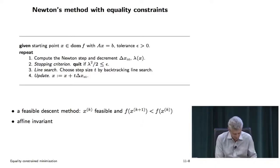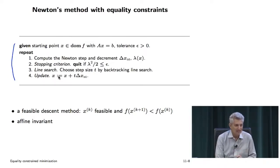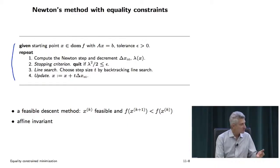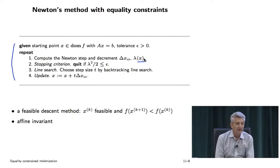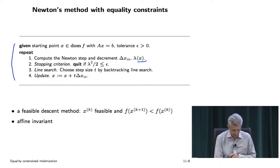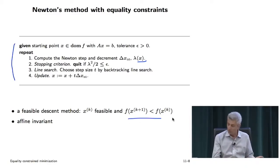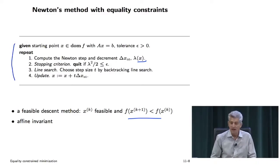Here's Newton's method with equality constraints. You compute the Newton step and decrement, quit if the decrement squared over two is less than epsilon, do a line search, and update. This algorithm is identical to Newton's method for unconstrained problems — Newton's step has been overloaded to handle equality constraints, meaning solve the big KKT system, and the Newton decrement has been overloaded appropriately. It's a feasible descent method: every step, x is feasible and the objective goes down unless you're at the optimum. And it's affine invariant — if you change coordinates, the algorithm is exactly the same.